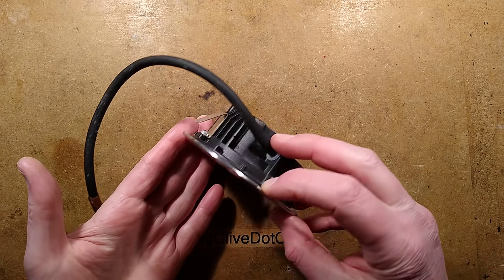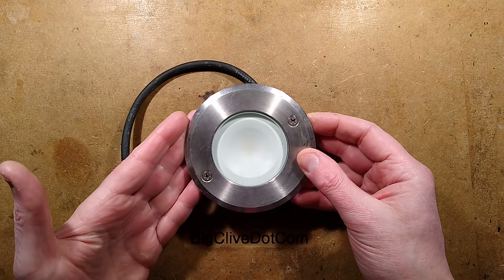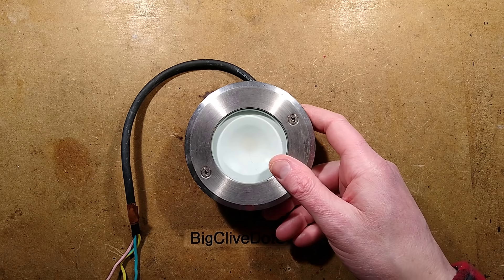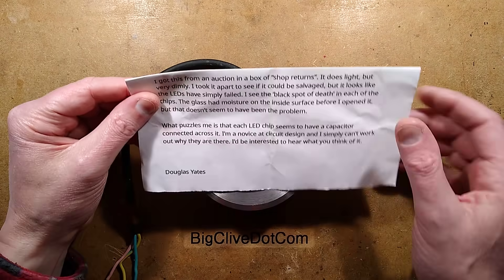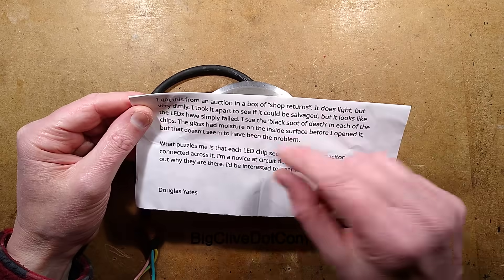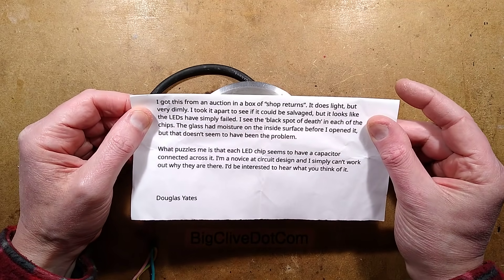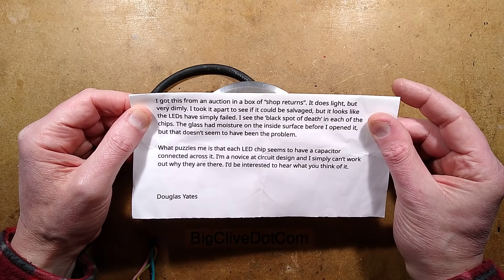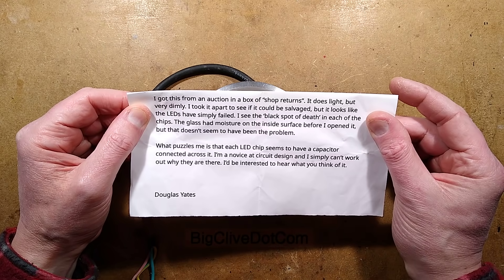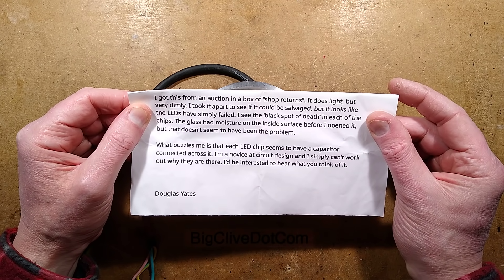An LED light, a dead underground LED light. This one comes with a story. Douglas says, I got this from an auction in a box of shop returns. It does light but very dimly. I took it apart to see if it could be salvaged, but it looks like the LEDs have simply failed. I see the black spot of death in each of the chips.